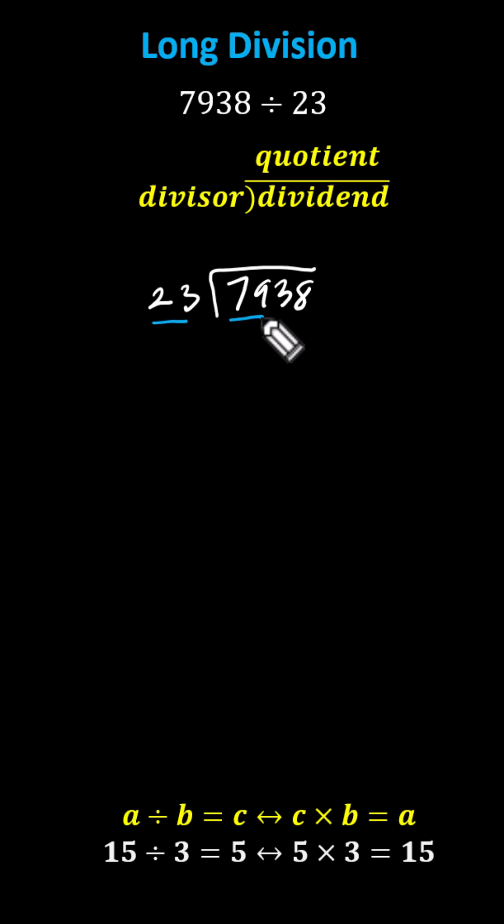Now we determine how many 23s there are in 79, let's try three. And now we multiply three by the divisor, and record it below the 79. Three times three is nine, and three times two is six, the product is 69, and now we subtract. If the difference is less than 23, the three is correct.